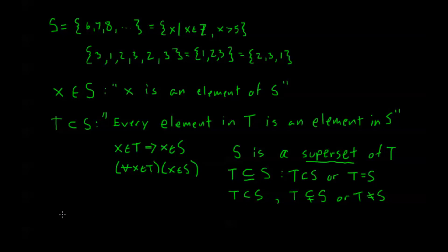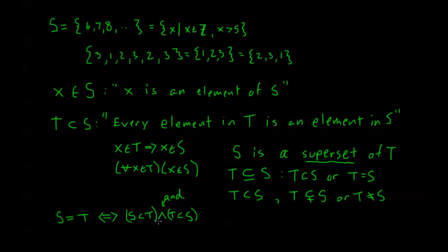One more statement before I clear the board. We say S equals T if and only if — remember this is my biconditional — S is a subset of T, and T is a subset of S. So using logic notation, this is 'and.' We say S is equal to T if and only if S is a subset of T and T is a subset of S. This fact may seem obvious, but if you're ever asked to prove that two sets are equal, this is how we prove it. Showing S ⊆ T and T ⊆ S is commonly the most direct and easiest way.